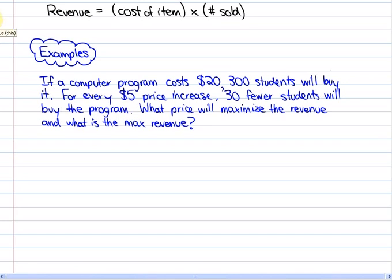So, for example, just before we get into this problem, they have all sorts of possible revenues. One would be at a cost of $20. It says they would sell 300, so that revenue would be a total of $6,000.